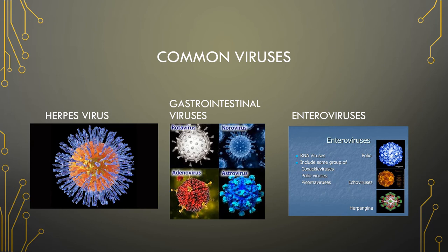Poliovirus is usually transmitted by the fecal-oral route and multiplies in the mucosa of the gut, entering typically through the mouth and colonizing in the nose and throat before making its way into the stomach. Most infections are asymptomatic, but in immunocompromised situations, pregnancy, or steroid use, it can spread into the central nervous system and cause permanent paralysis and damage to the spinal cord. We've pretty much eliminated poliovirus in the United States, but it's still an issue in developing countries.